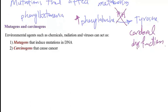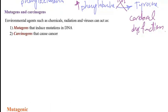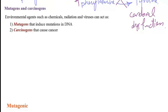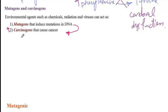Mutagens refer to any environmental agents — like chemicals, radiation, or viruses — that cause mutations in DNA. Carcinogens, on the other hand, refer to environmental factors or chemicals or radiation that can cause cancer. There is a positive correlation between increased rate of mutagenesis and cancer development — the higher the rate of DNA mutation, the higher the rate of cancer development.